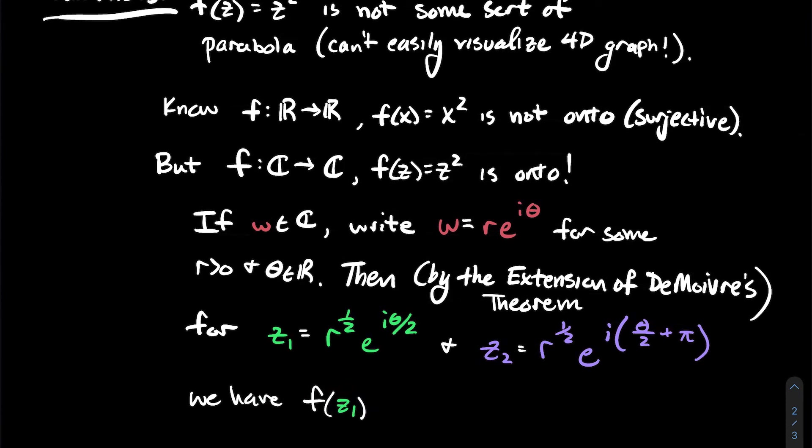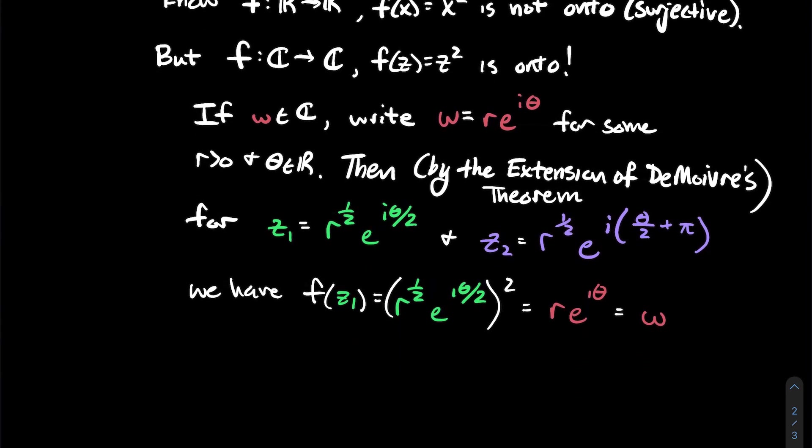So what's the point? I have these two complex numbers, z1 and z2, such that when you plug z1 into f, f squares it. But when I square it, I just get r e to the i theta, which of course is w. And really, I could stop there to conclude it's onto.